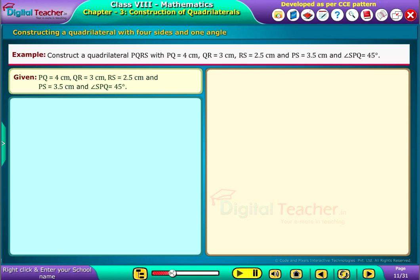Given that PQ equal to 4 cm, QR equal to 3 cm, RS equal to 2.5 cm and PS equal to 3.5 cm and angle SPQ equal to 45 degrees.